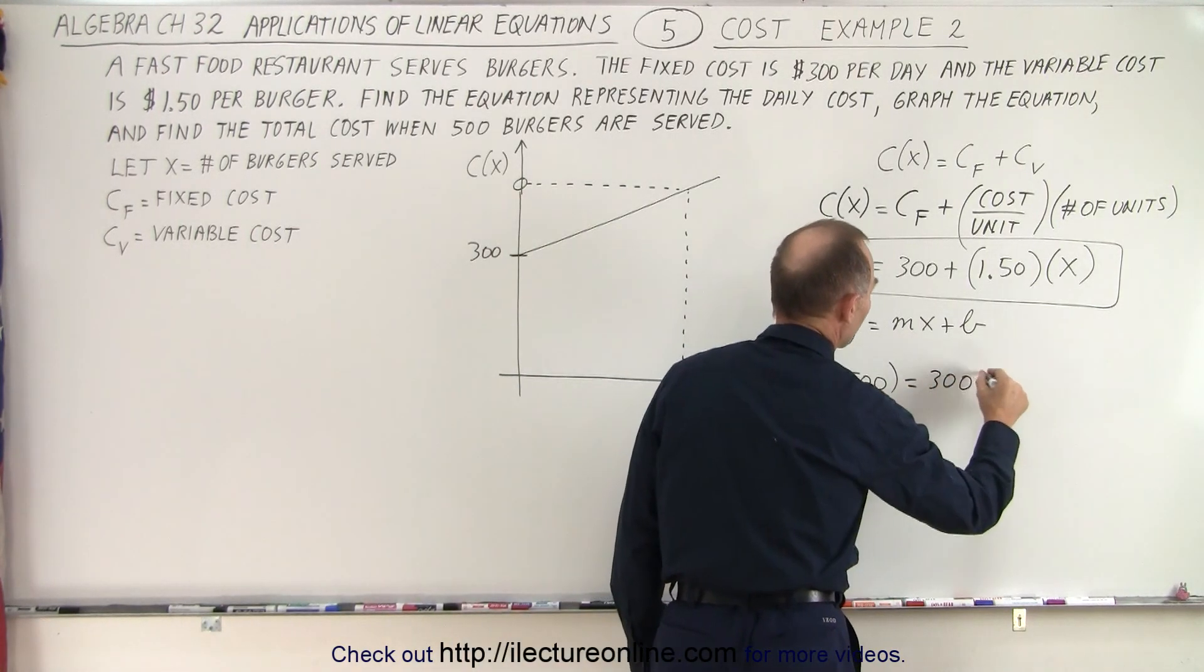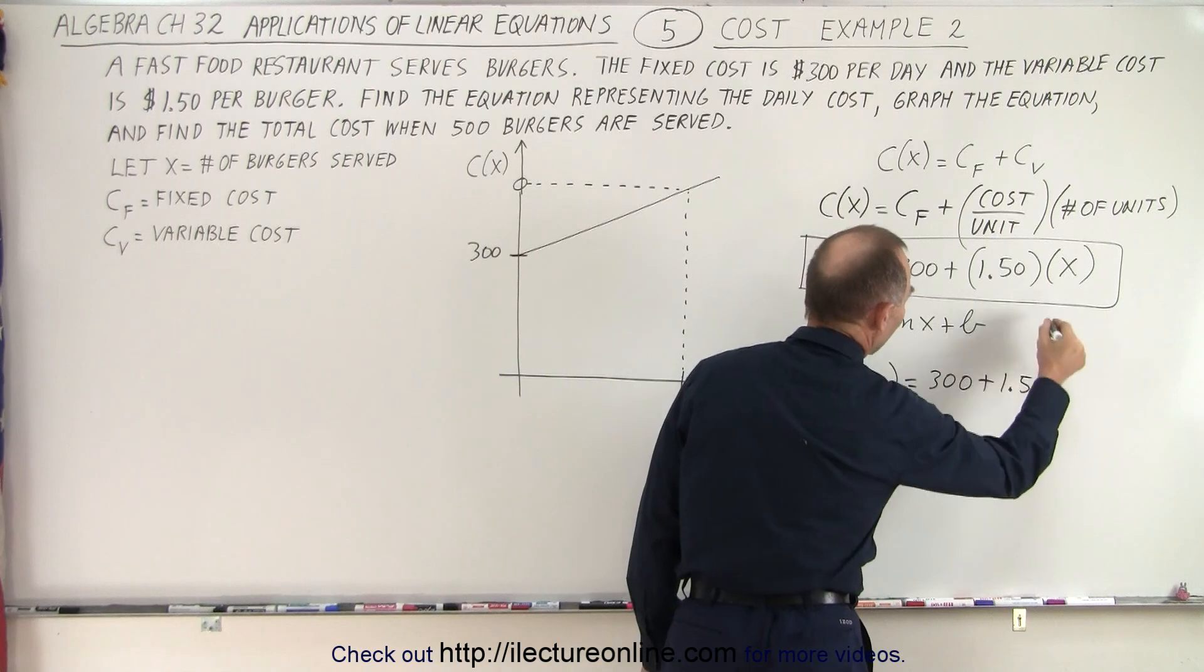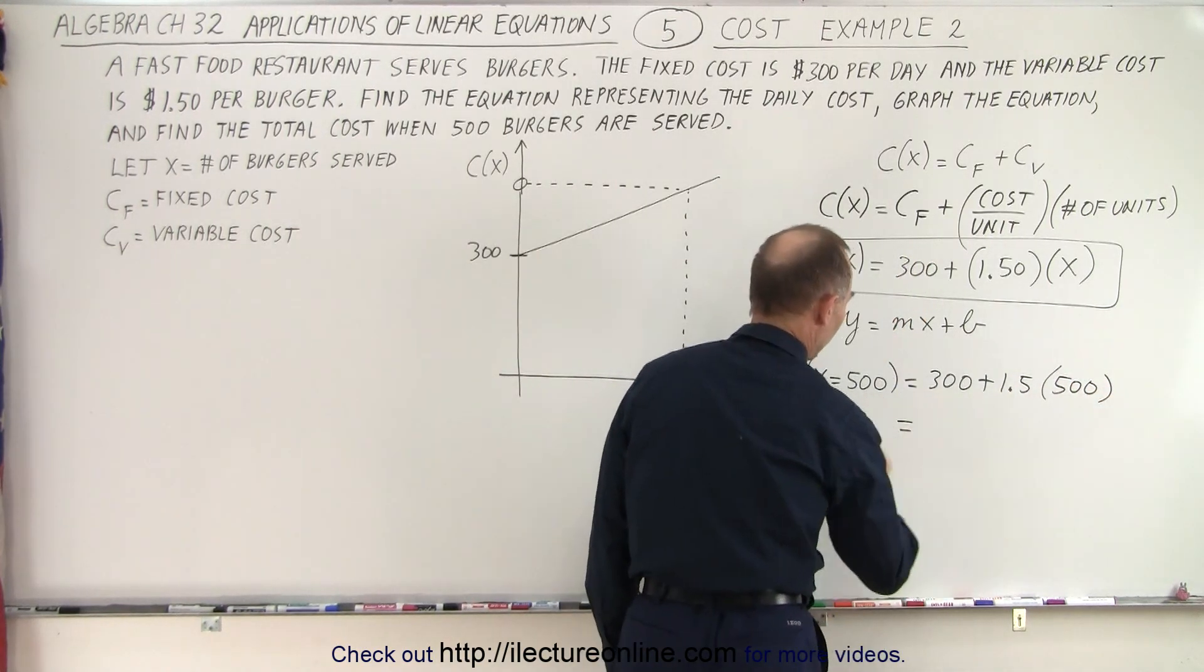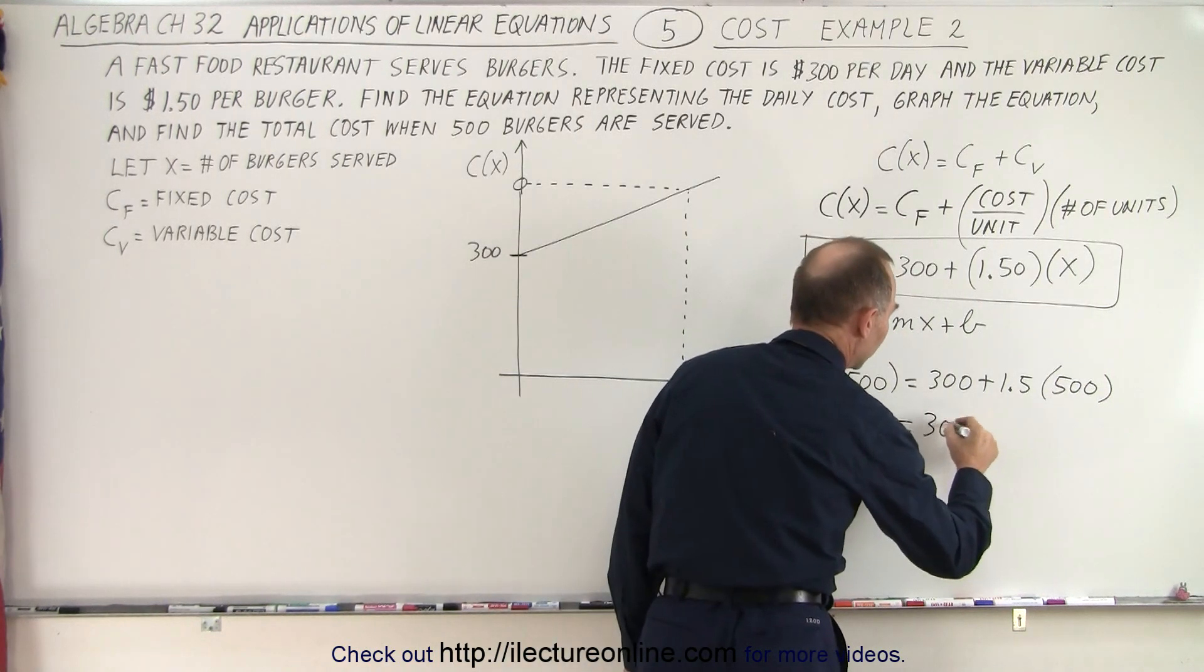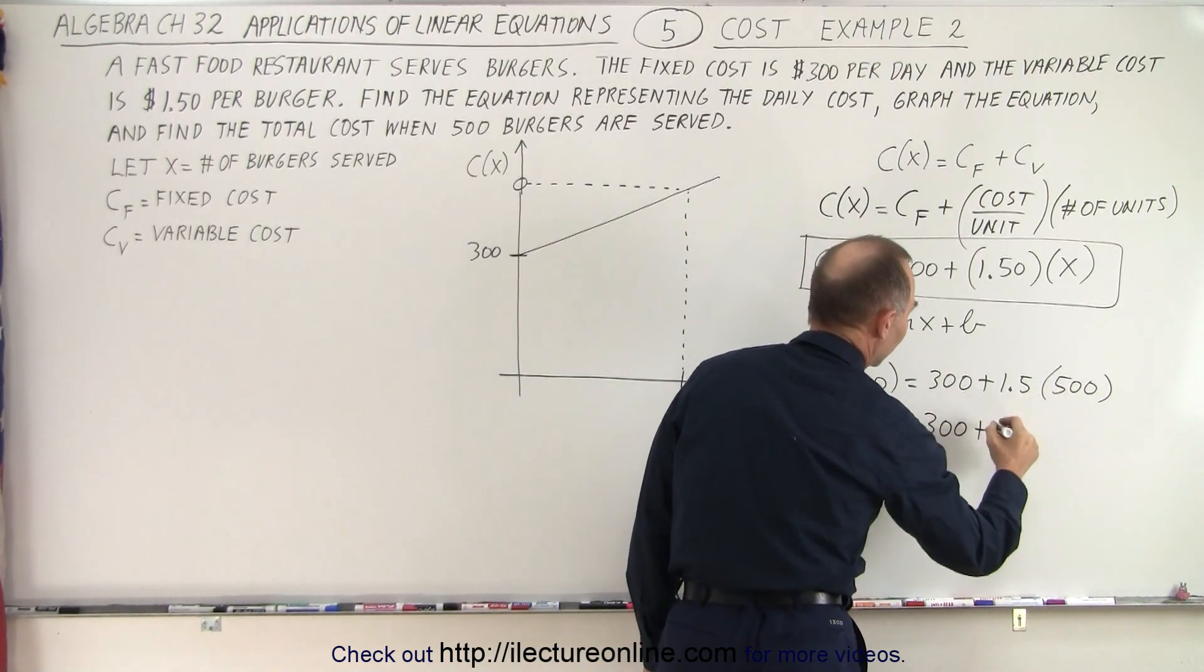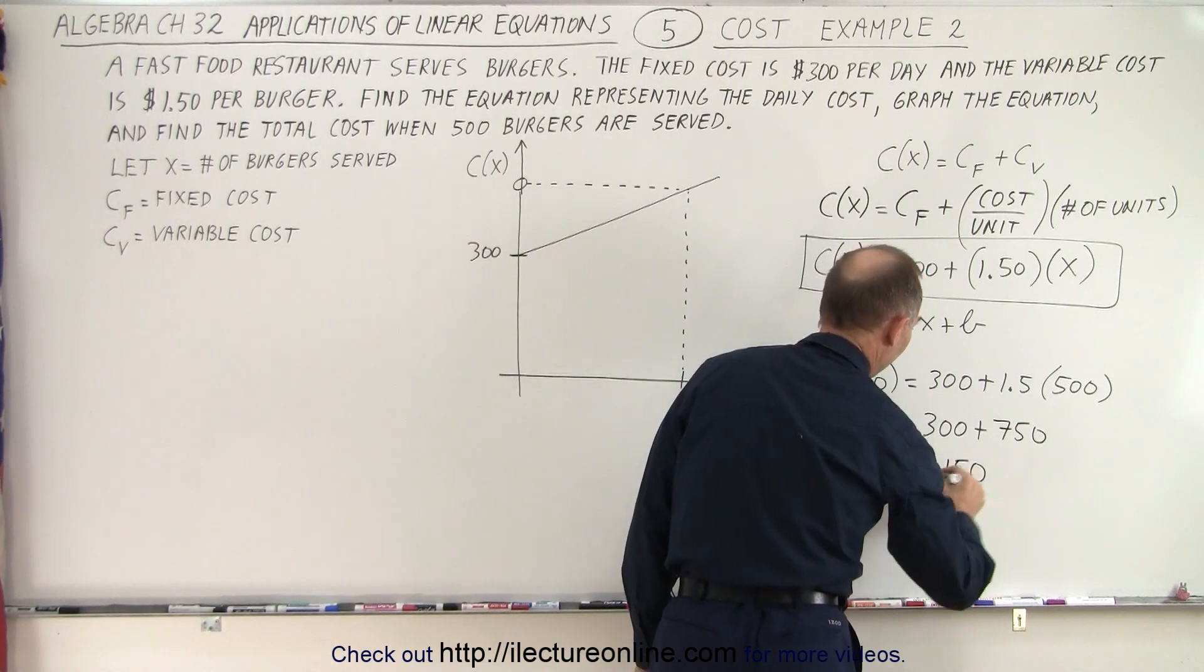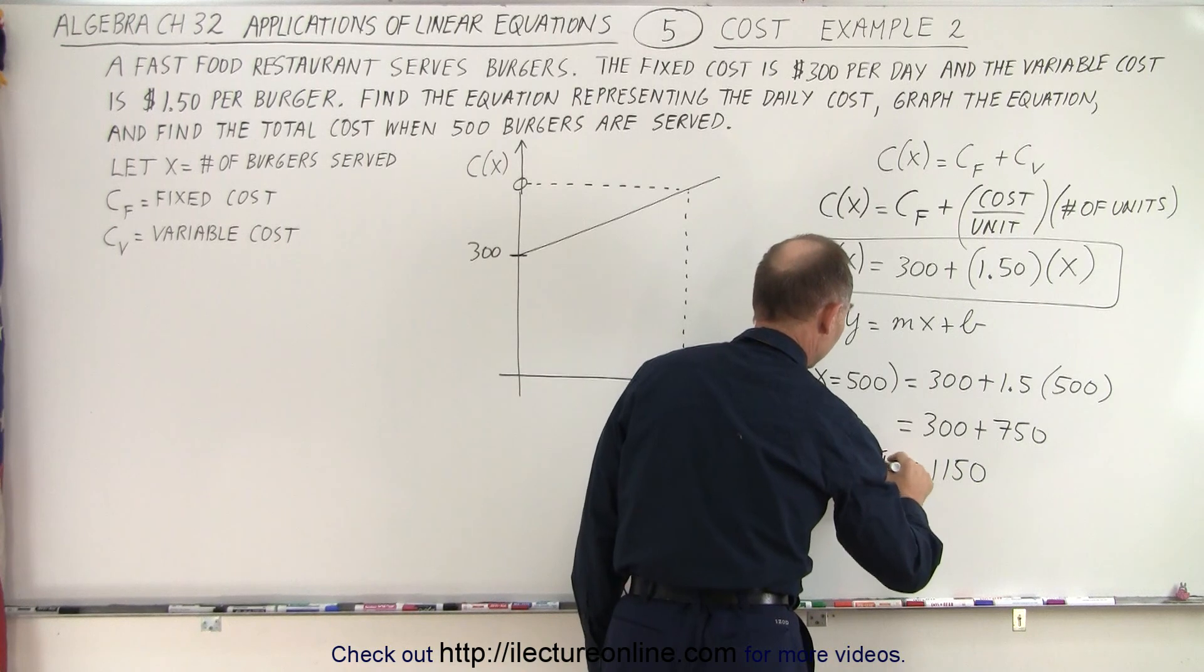So it's equal to 300 plus 1.5 times x, which is 500. And so the total cost, when x equals 500, is 300 plus 500 times this, which is 750. And so it would be 1,150 for when x equals 500.